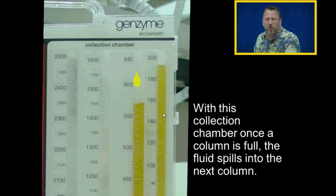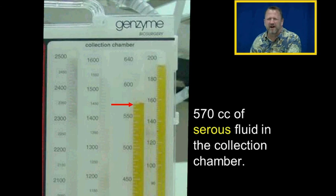And so that's why the more advanced, more complex collection systems have these different columns. And here we have 570 cc's of serous fluid in the collection chamber.